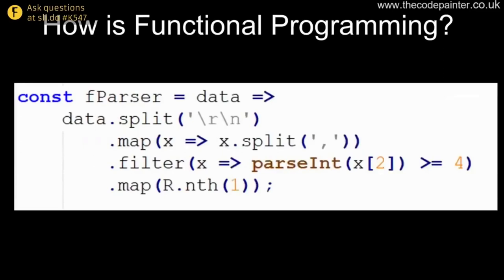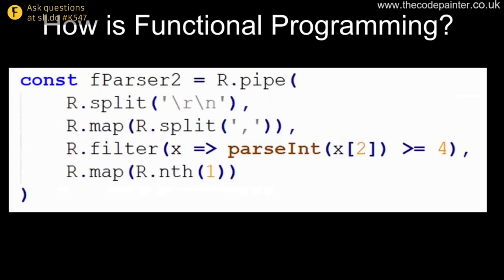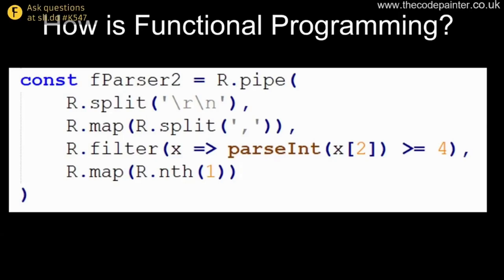Returning to our parser function, if we want to convert it all into a pipe structure: pipe says give me the value, then r.split on newline, then r.map with r.split on comma, then a filter — I'm filling that in longhand with an arrow function — and finally r.map where I'm passing r.nth(1) to go through the entire array and select out the first item. Functionally this is exactly identical to all previous versions of the parser, but more compact and relying more on code that someone else provided.